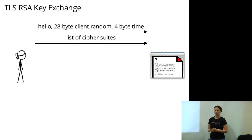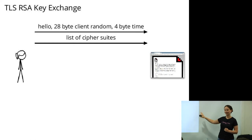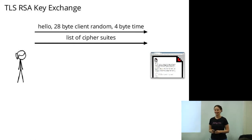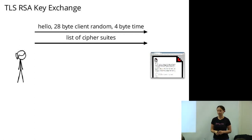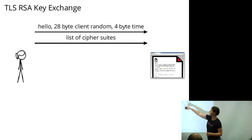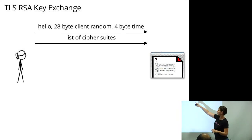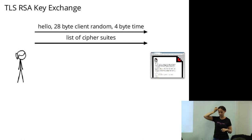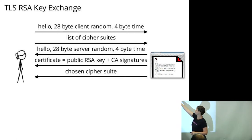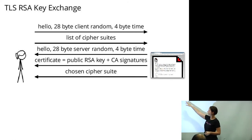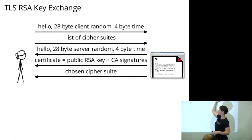I'm going to go over the TLS key exchange again since I'm going to talk about how we actually get data from TLS. In the RSA key exchange: Alice wants to connect to a website, so she sends a hello message, her client random — which is 28 bytes of what should be random data and a 4-byte time value — and her list of supported cipher suites. The server responds with a server random — also 28 bytes of random plus 4 bytes of time — and a certificate containing the web server's public RSA key, signed by a certificate authority.